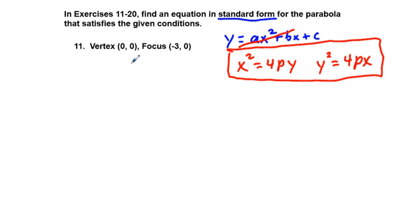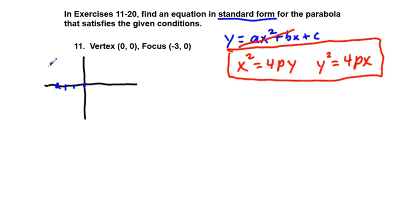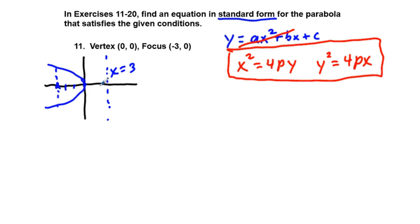For problem 11, we have a vertex at (0, 0) and a focus at (-3, 0). Drawing a coordinate plane, we have a vertex at the origin and a focus at negative 3, 0 — over to the left 3. So we're going to have a leftward opening parabola. We'll have a directrix over here with equation x equals 3, which is the opposite of the focus.